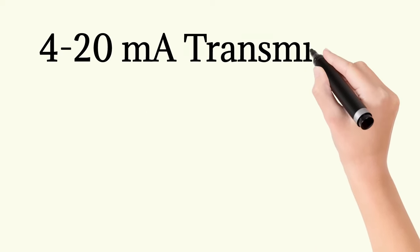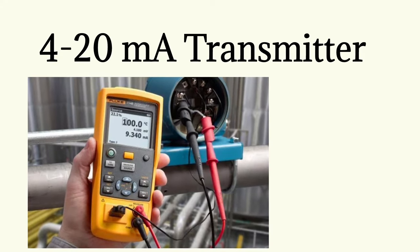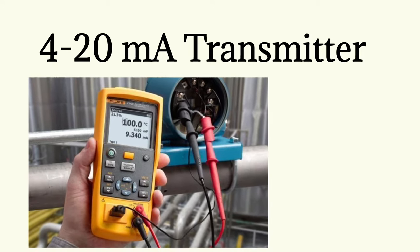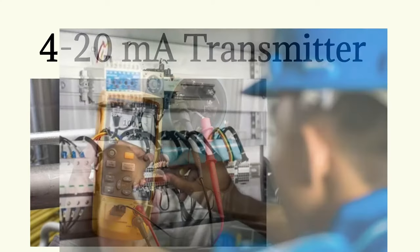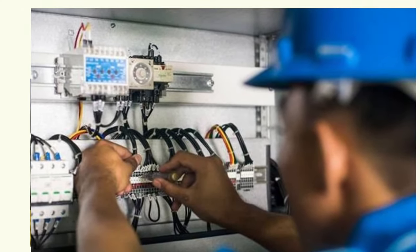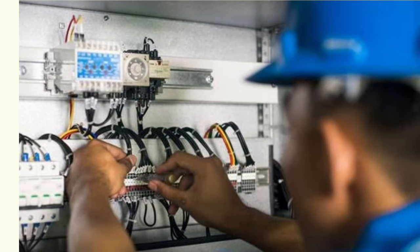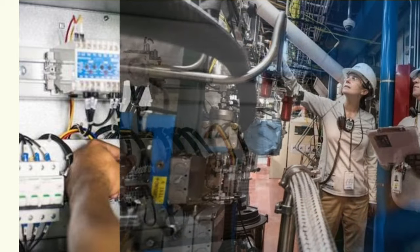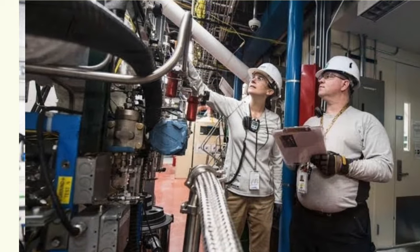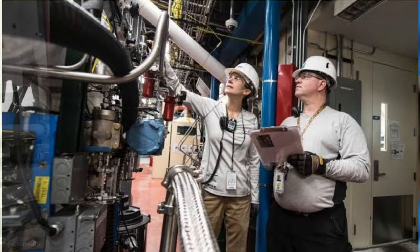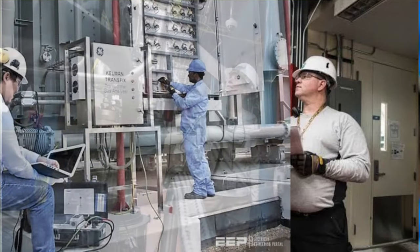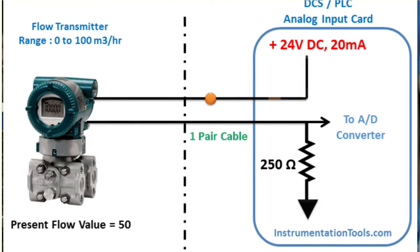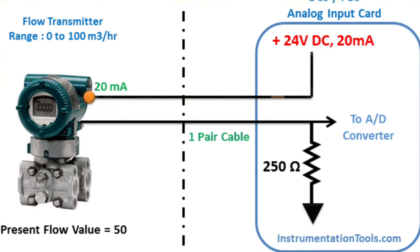A transmitter is a transducer that responds to a measured variable by means of a sensing element and converts it to a standardized transmission signal, like 4 to 20 milliampere, that is a function only of the measured variable. Transmitters can have any of several electrical connection schemes. The most common and easiest to use is the two-wire, loop-powered configuration. This is generally the basic configuration for industrial process control systems when digital communication is not required.